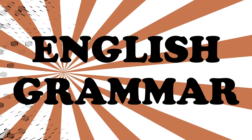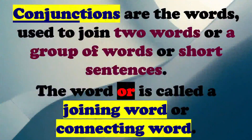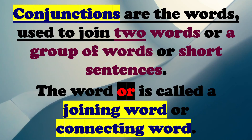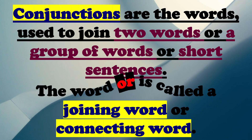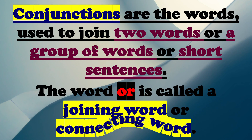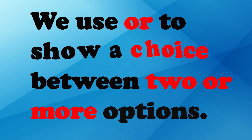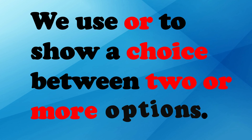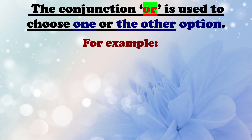English grammar: Conjunction OR. Conjunctions are the words used to join two words, a group of words, or short sentences. The word OR is called a joining word or connecting word. We use OR to show a choice between two or more options. The conjunction OR is used to choose one or the other option.